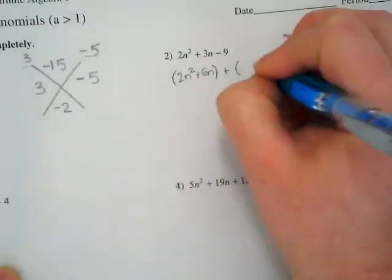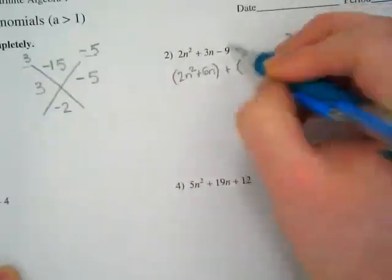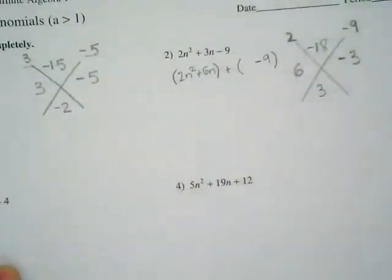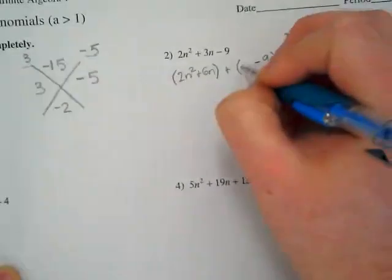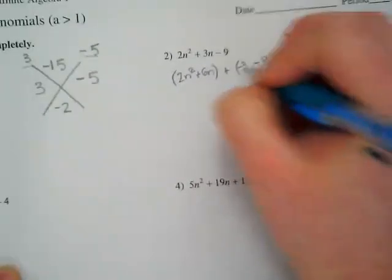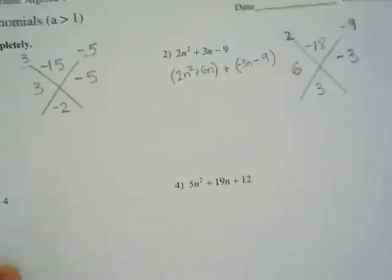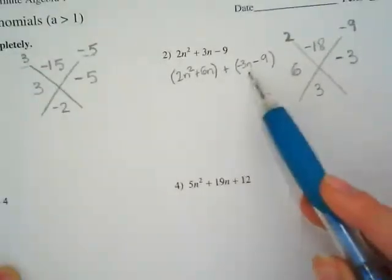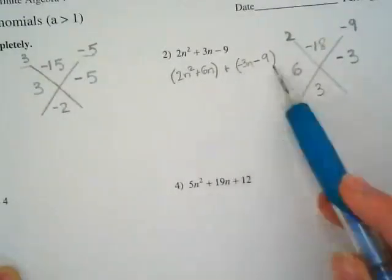And I'm putting my negative 9 on the end, just like it was from up above. And I'm putting negative 3n here, so now they are grouped.